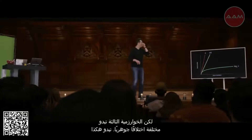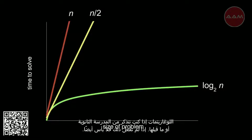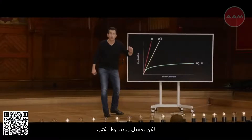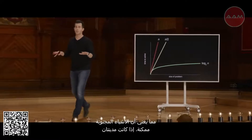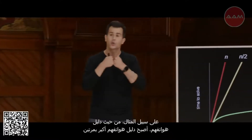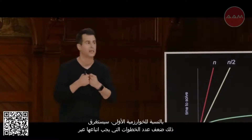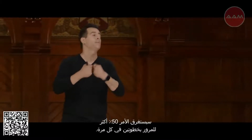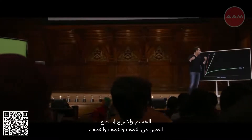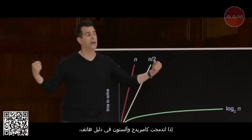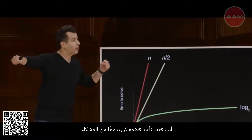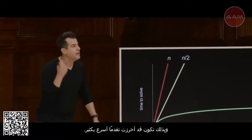But the third algorithm looks fundamentally different — it looks like this. Logarithms, if you recall from high school, represent a fundamentally different function, a different shape. The green line is going up and up, but at a much slower rate of increase, which means crazy things are possible. If two towns in Massachusetts — like Cambridge and Allston across the river — merge next year, their phone book just got twice as big. For the first algorithm, that takes twice as many steps. The second algorithm takes 50% more steps. But the third algorithm — dividing and conquering, halving again and again — how many more steps does it take if the phone book doubles? Just one more step. You just take a really big bite out of the problem once you decide if John Harvard is to the left or to the right, and so you've made much faster progress.